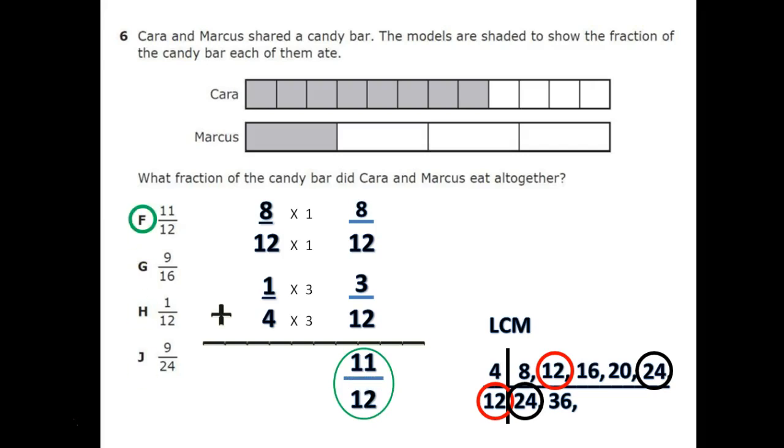Now if you're a visual learner, use the picture. If you have a picture, always use the picture. If you look at Kara's, her slices are cut into 12. If you cut Marcus's into 12.